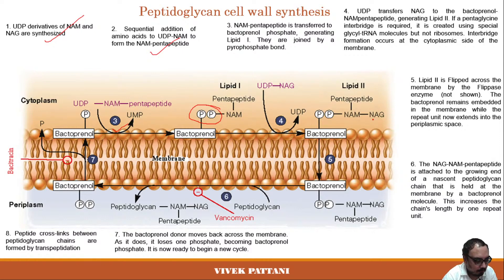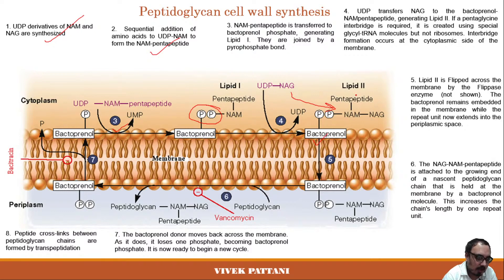In Lipid II, NAG from UDP-NAG joins the NAM on the bactoprenol phosphate, connected by pyrophosphate bonds. This whole Lipid II complex is flipped across the membrane by the enzyme flippase, passing the bactoprenol complex carrying NAM, NAG, and the pentapeptide to the other side of the membrane.